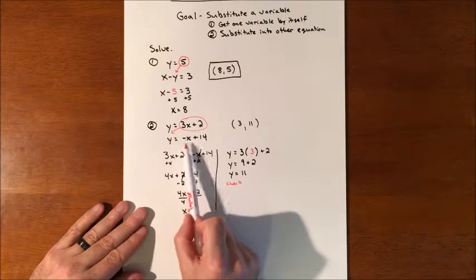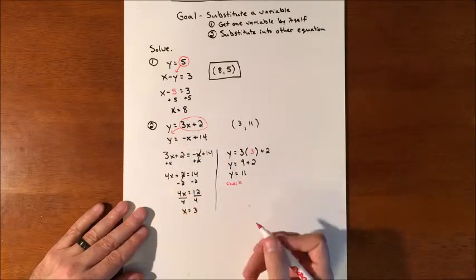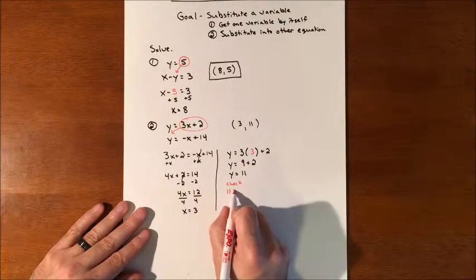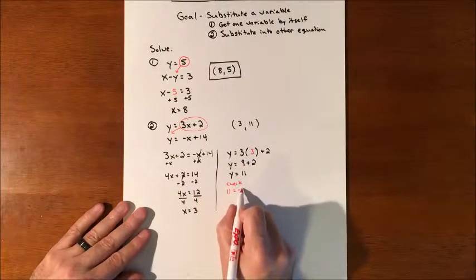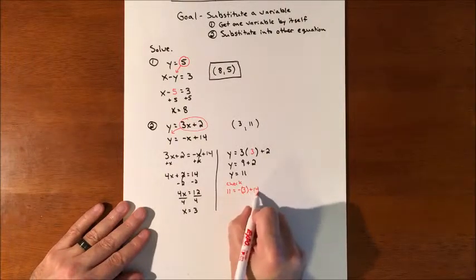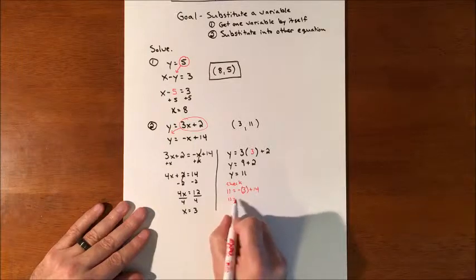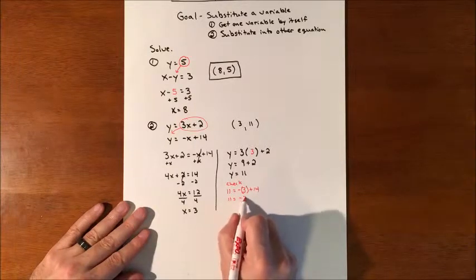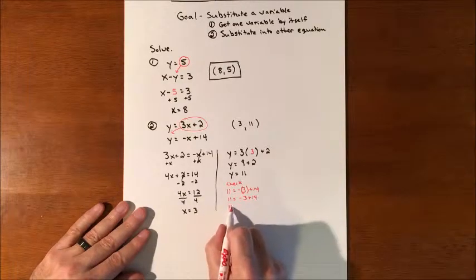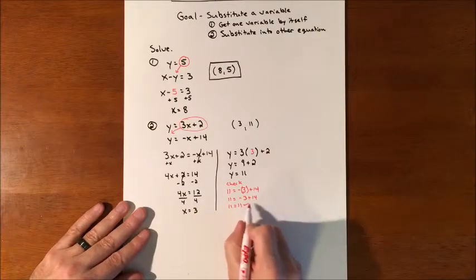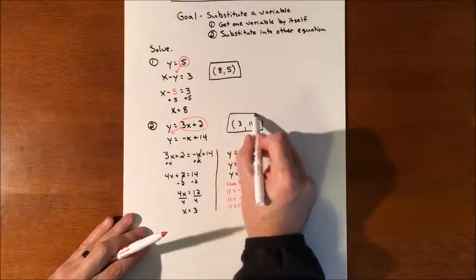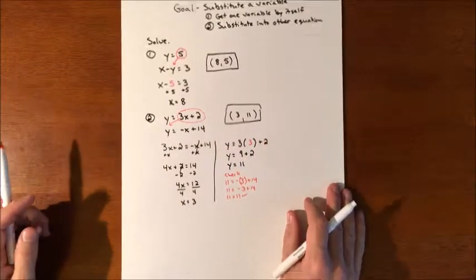We plug x and y into the other equation to make sure it also satisfies that equation. The y value is 11, and we have negative x, which is negative 3, plus 14. This should equal 11 — and negative 3 plus 14 does make 11. The check works, so our solution is (3, 11).